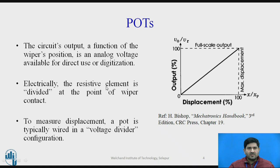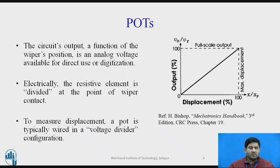The resistive element is divided at the point of wiper contact and a pot is typically wired in a voltage divider configuration. This is the typical arrangement. Since we have already studied this in the past, we are more interested in finding out the typical applications of these devices for our current course.